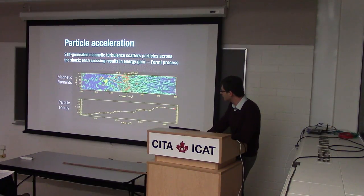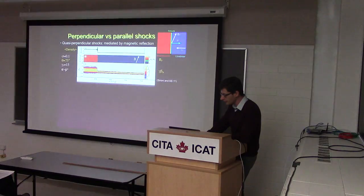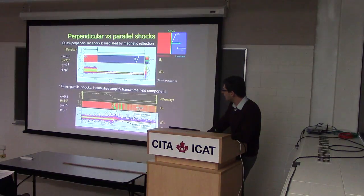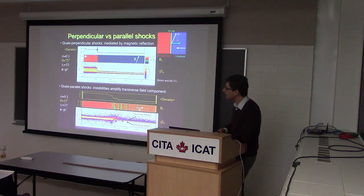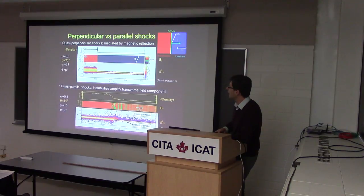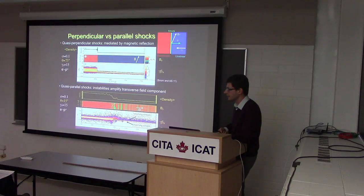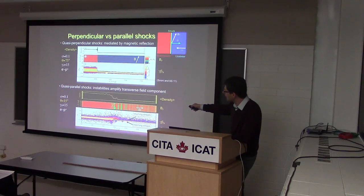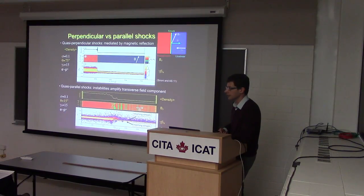That's roughly what happens with unmagnetized shocks. With finite magnetic fields things become more interesting. There is a critical angle above which nothing happens: if the magnetic field is inclined above a certain angle with respect to the shock normal, those shocks don't accelerate anything. For 75-degree inclination, you see no returning particles and a beautiful Maxwellian with no acceleration.